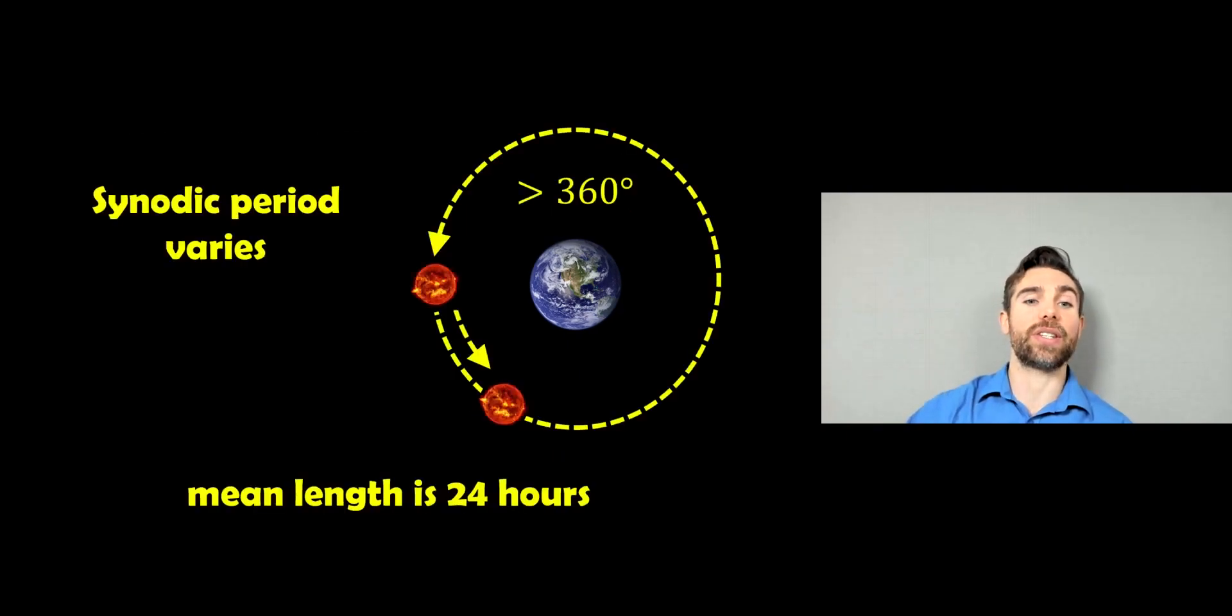Now, the synodic period, again, is normally referred to as the solar period or the solar day. And this is longer than a 360 degree rotation. It has to go a little bit further round. And the mean length is 24 hours. Now, it does vary. So this is not always the same during a year. It changes. It goes greater than that and less than that. But the mean length of this particular period is about 24 hours, which is what we use.